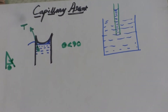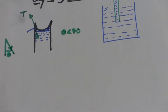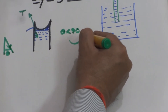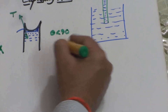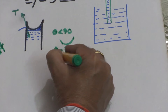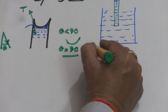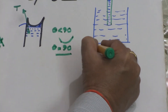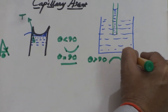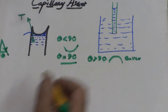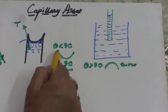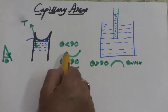The angle of contact theta here is less than 90 degrees. Wherever the angle of contact is less than 90, a concave surface takes place. If theta is greater than 90, then a convex surface forms. If theta is less than 90, the meniscus is in the shape of a concave.